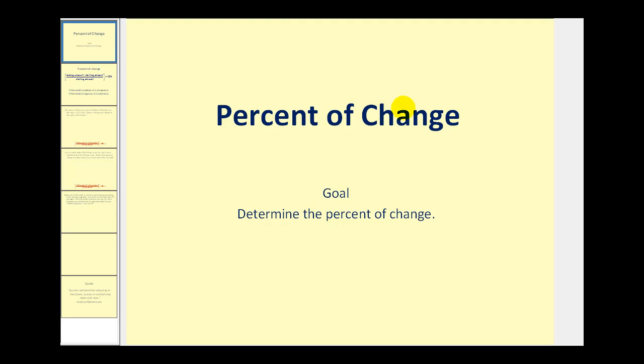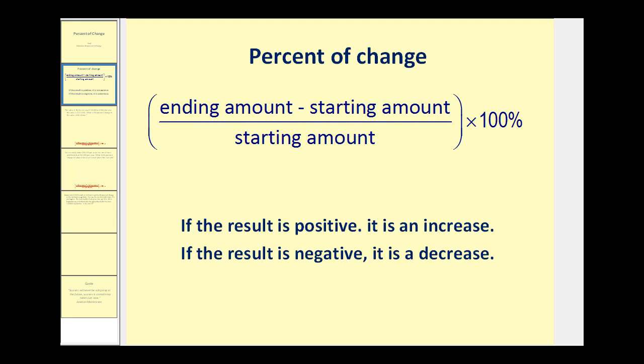Welcome to a lesson on the percent of change. To calculate the percent of change, we take the ending amount minus the starting amount, divided by the starting amount, times 100 percent. If the result is positive, it is an increase, and if the result is negative, it is a decrease.